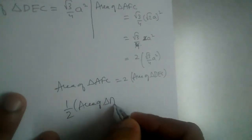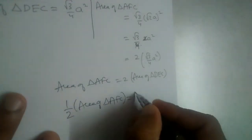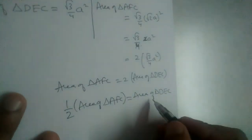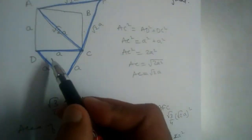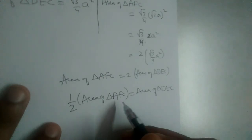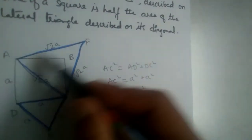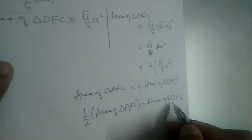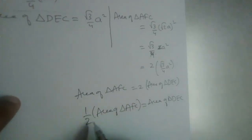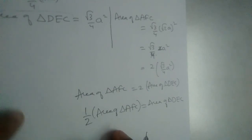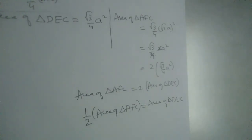So, area of triangle DEC = (1/2) × area of triangle AFC. Triangle DEC is the equilateral triangle drawn on one side of the square, and triangle AFC is the equilateral triangle drawn on the diagonal of the square. We have thus proved that the area of the equilateral triangle drawn on one side of a square is half of the area of the equilateral triangle drawn on its diagonal.